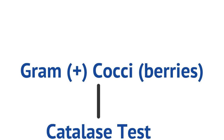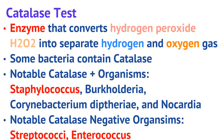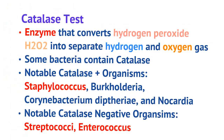The first test you need to do when you differentiate gram-positive cocci is called the catalase test. The catalase test breaks down gram-positive cocci into two major groups. Catalase is an enzyme that converts hydrogen peroxide (H2O2) into its separate components, hydrogen and oxygen. There are some bacteria that contain this enzyme. When you put hydrogen peroxide in a medium with this bacteria, you'll see oxygen bubbles form, meaning it's catalase-positive. Some notable catalase-positive organisms are Staph, Pseudocarderia, Corynobacterium, and Nocardia. Catalase-negative organisms are Strep and Enterococcus.